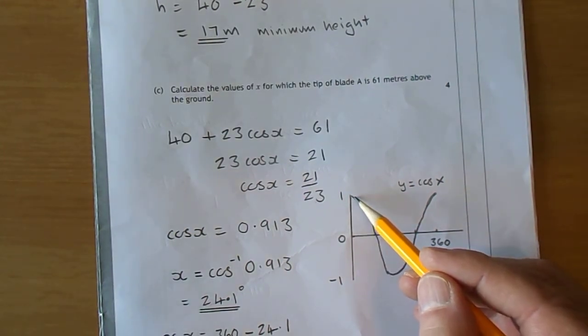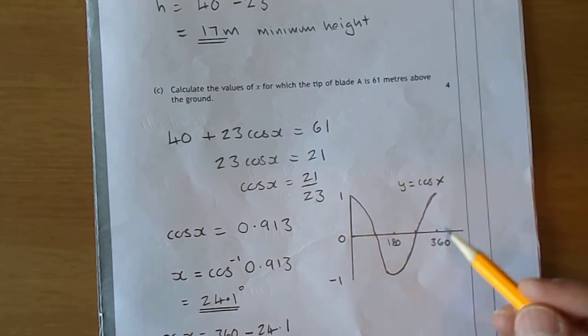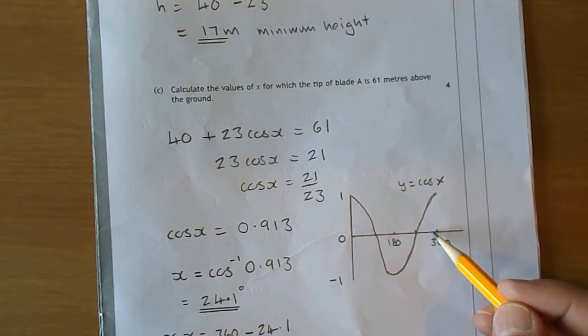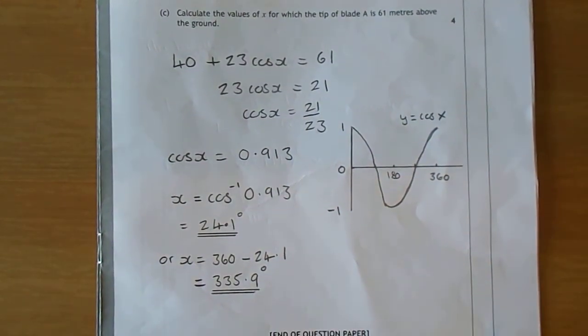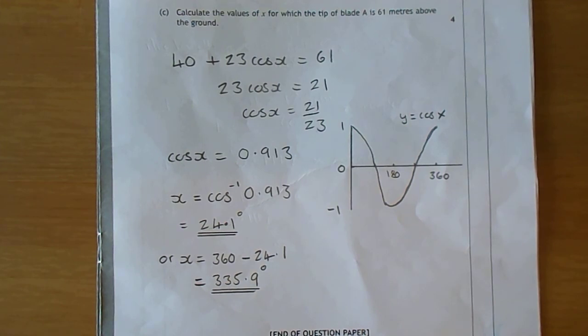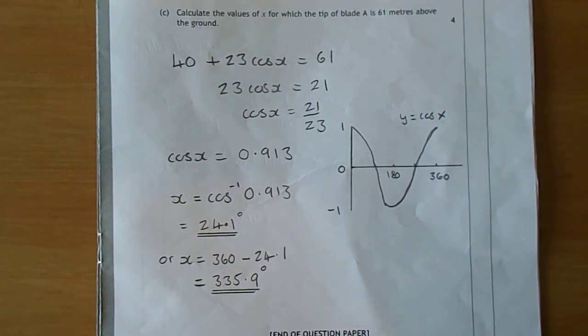So cos(24.1) = 0.913. And over here, you take it away from 360, which gets you the corresponding one of 335.9 degrees. So the two answers are 24.1 degrees and 335.9 degrees. That's all, thank you.